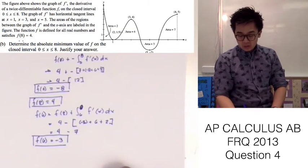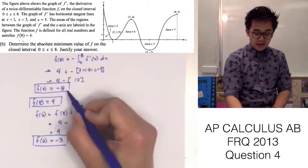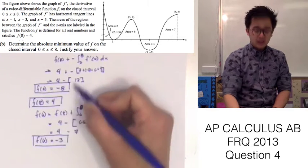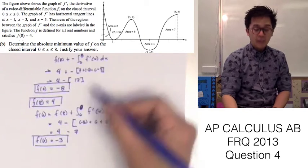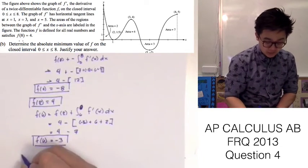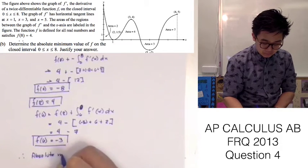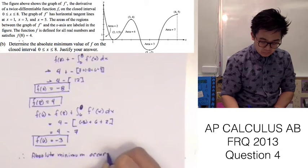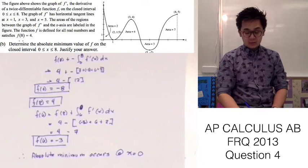Based on our computation, the absolute minimum occurs at f(0) = −8, because it gives us the lowest value of the function f among all candidates. Therefore, the absolute minimum occurs at x = 0.